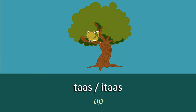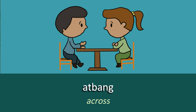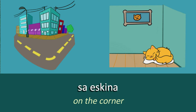Moving on, we have the word for 'Up', which is 'Taas' or 'Itaas'. And the opposite — 'Down' — is 'Ubus'. So what's the word for 'Across'? Across is 'Atbang'. And if we want to say 'On the corner', we use 'Sa Iskina'. Iskina means corner.